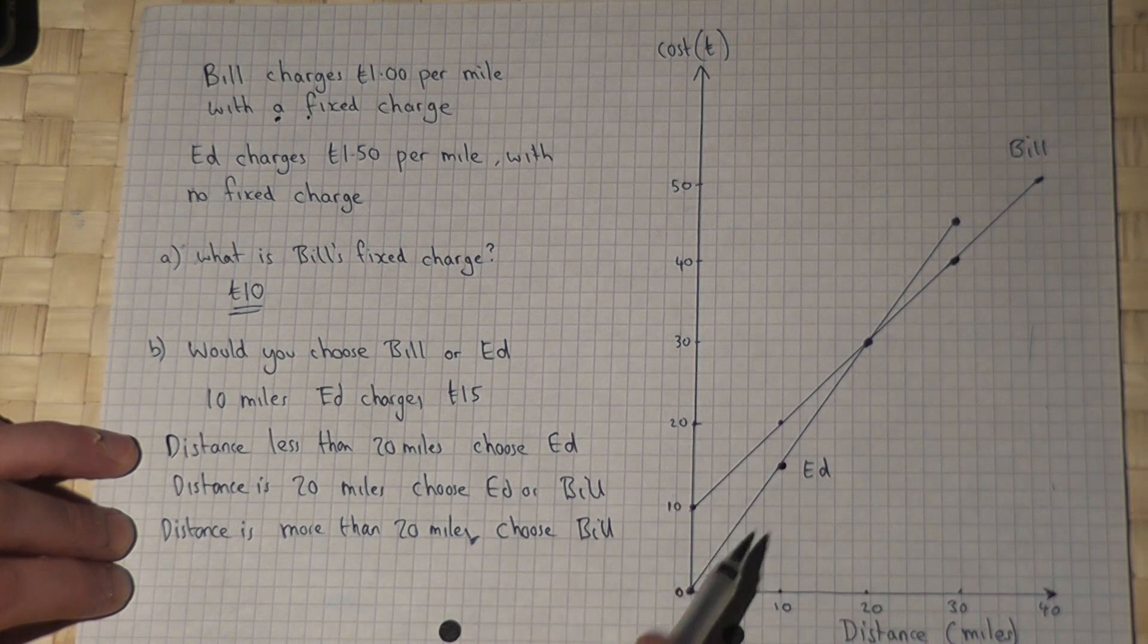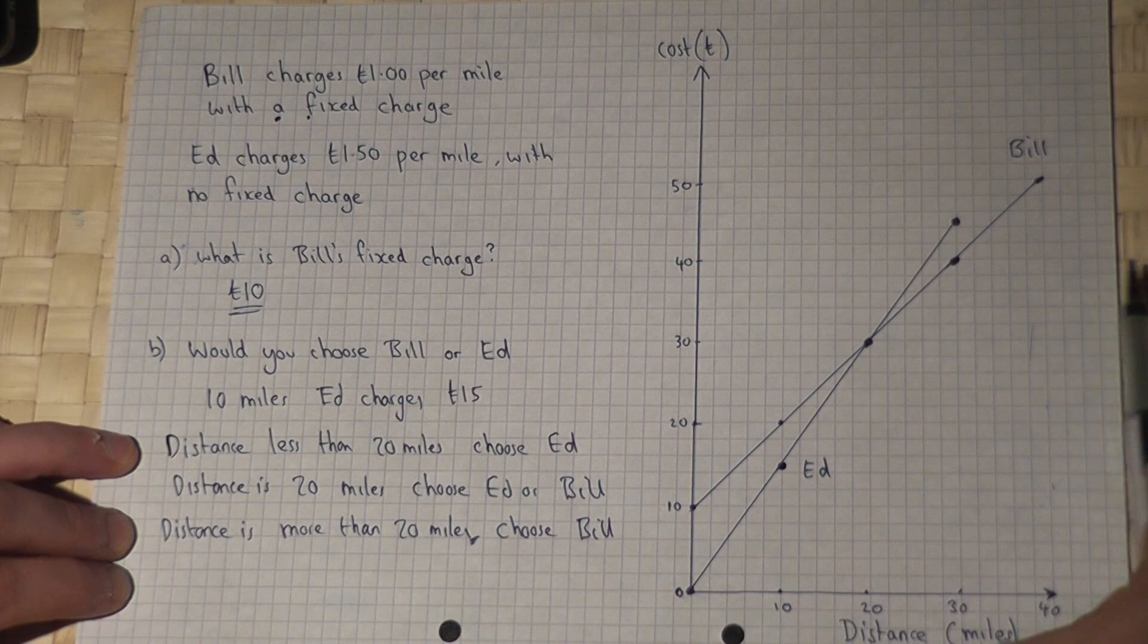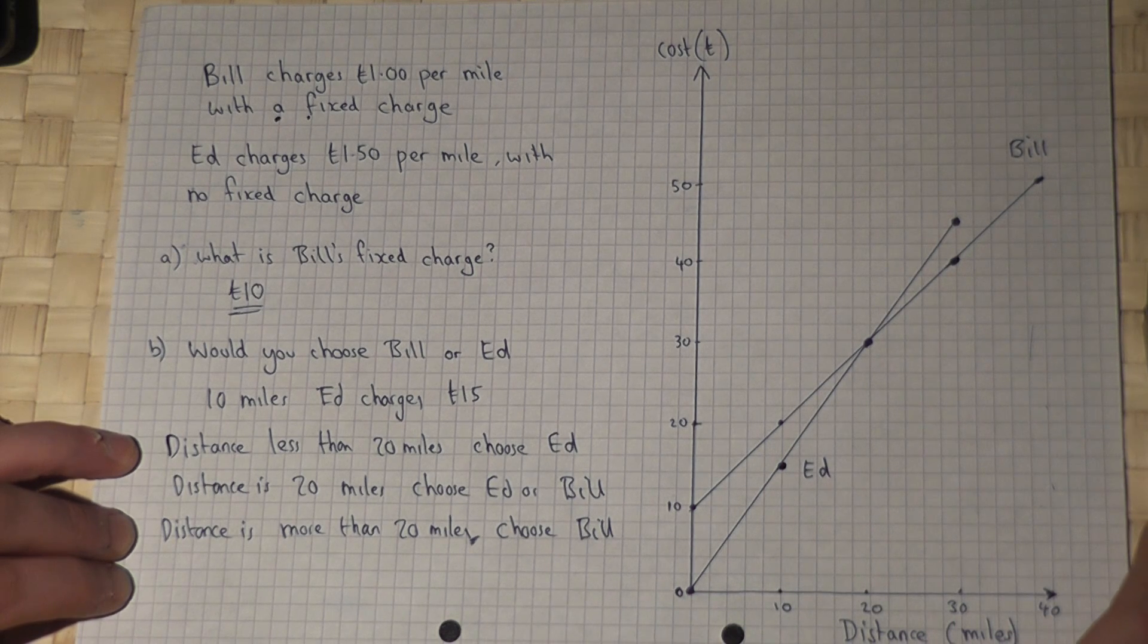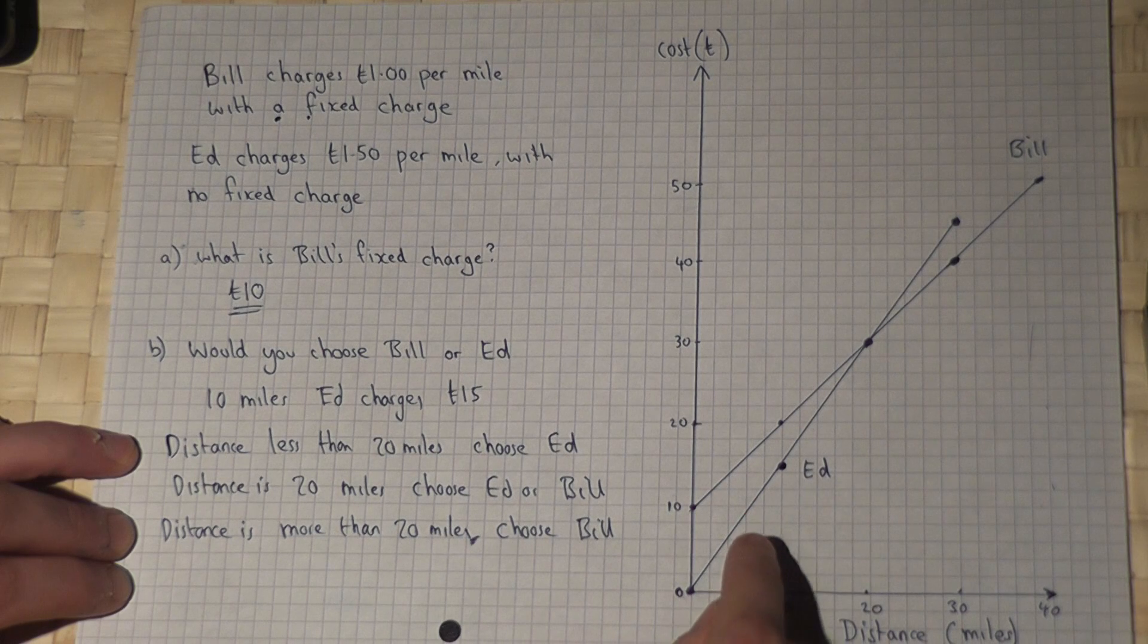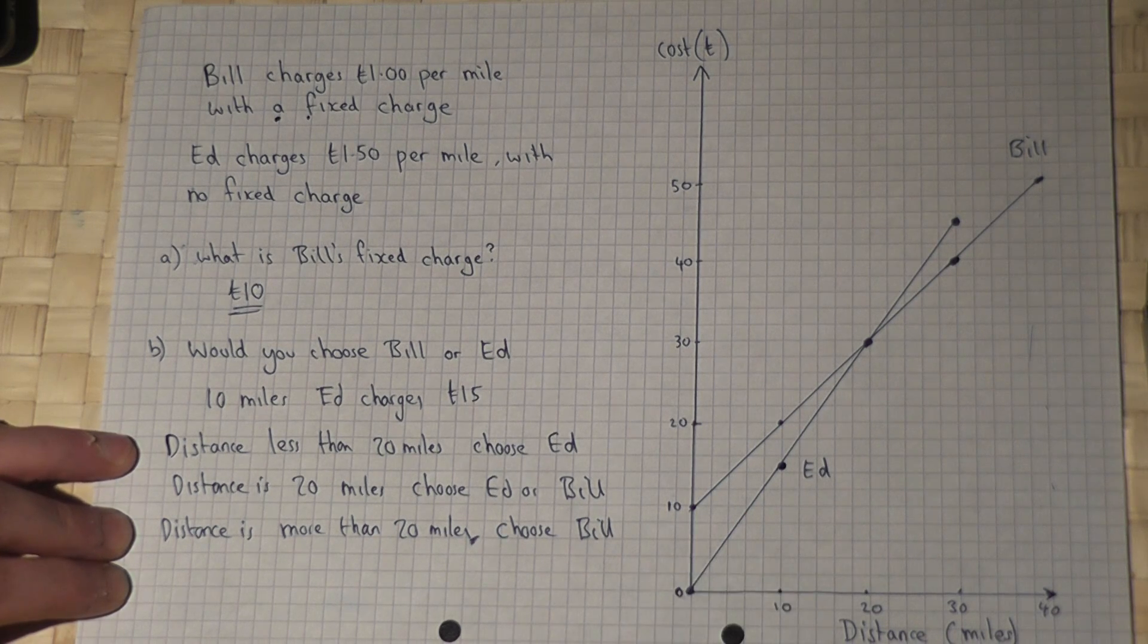By plotting both graphs, we can compare the cost graphs of both people, and we can choose the correct person, which depends upon the distance the parcel is going.